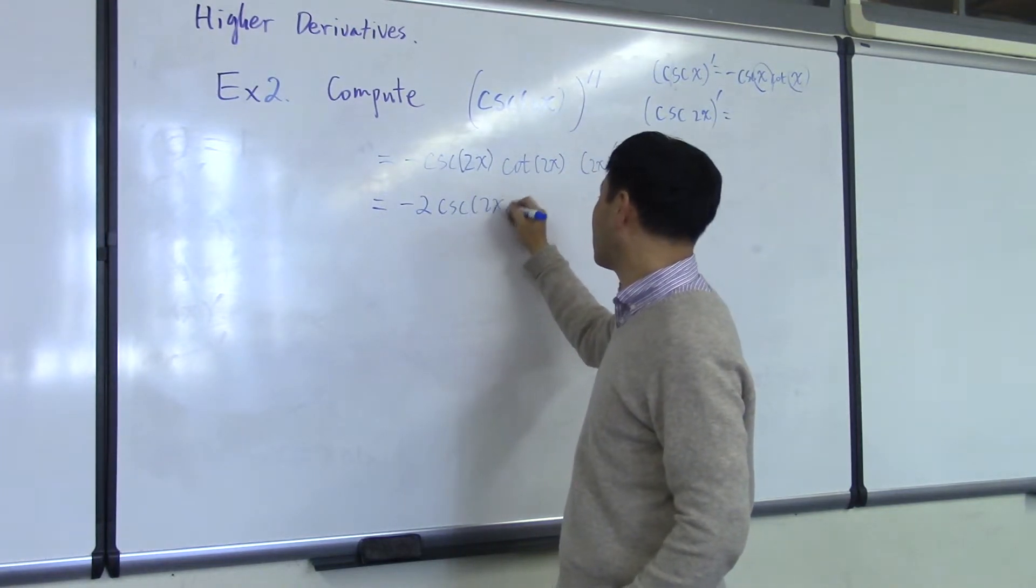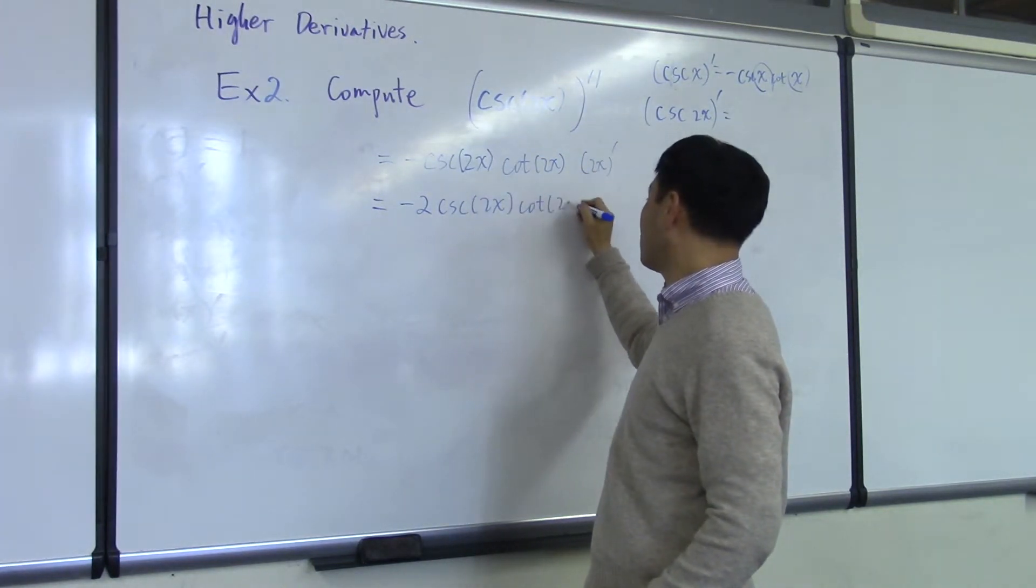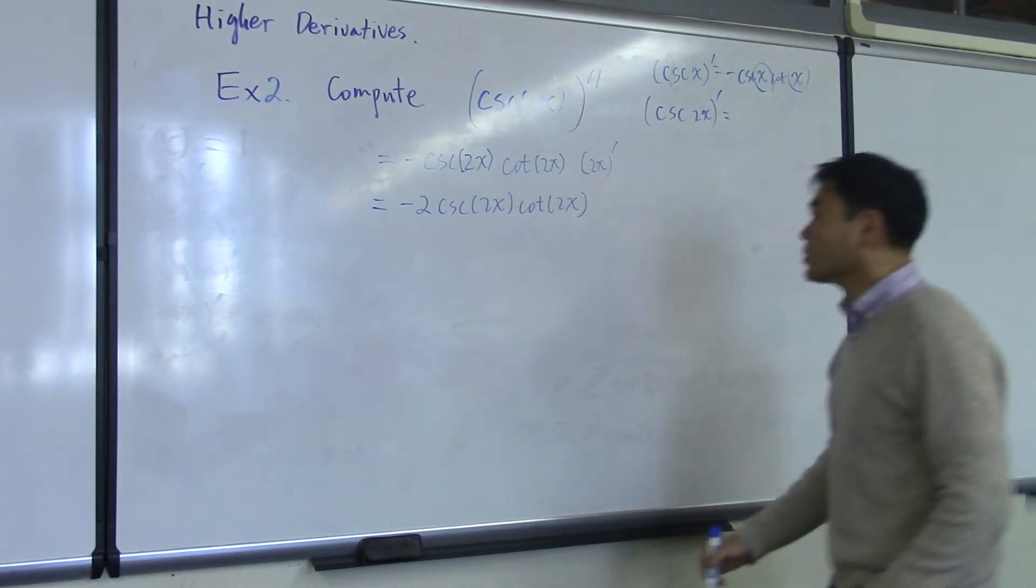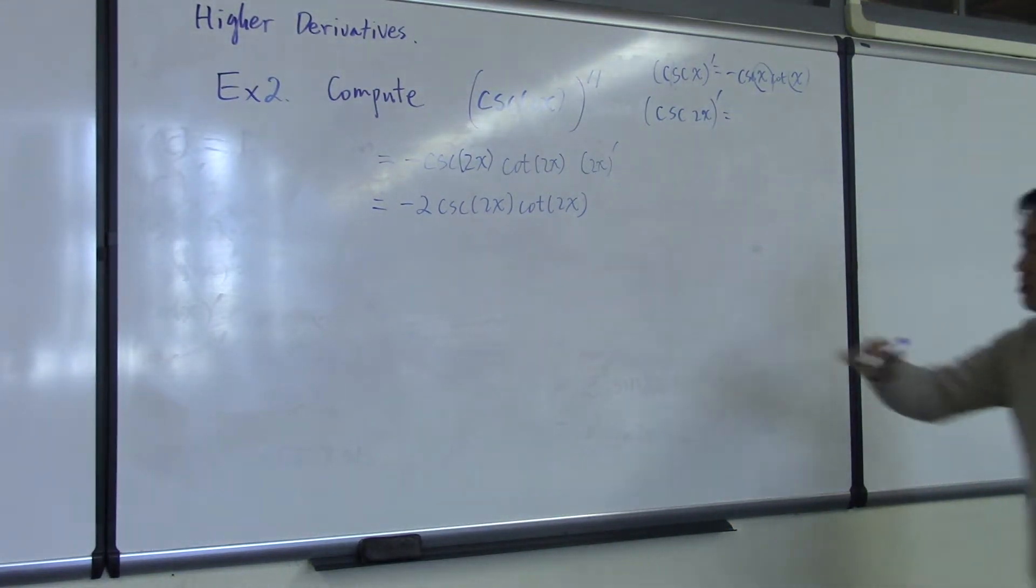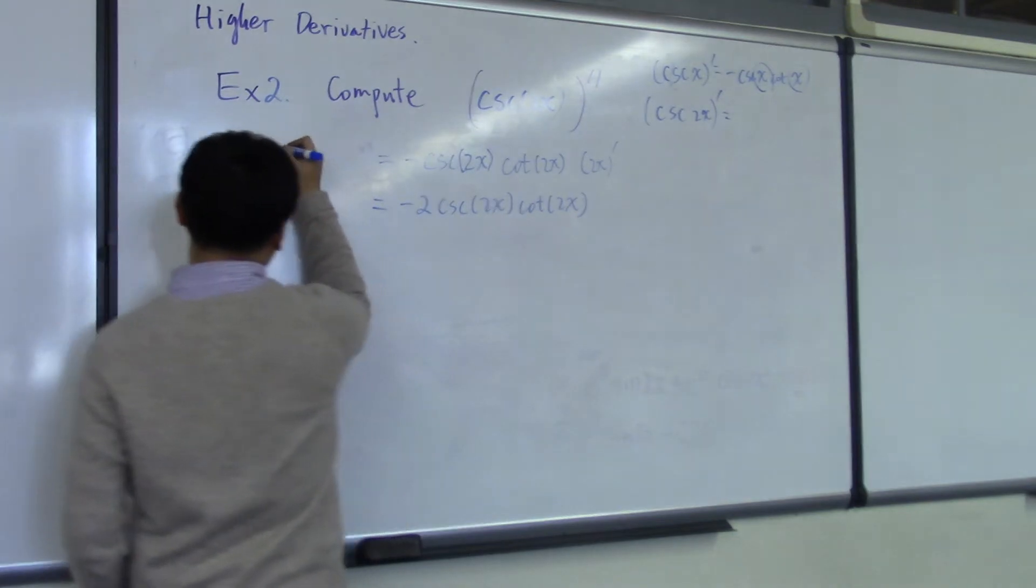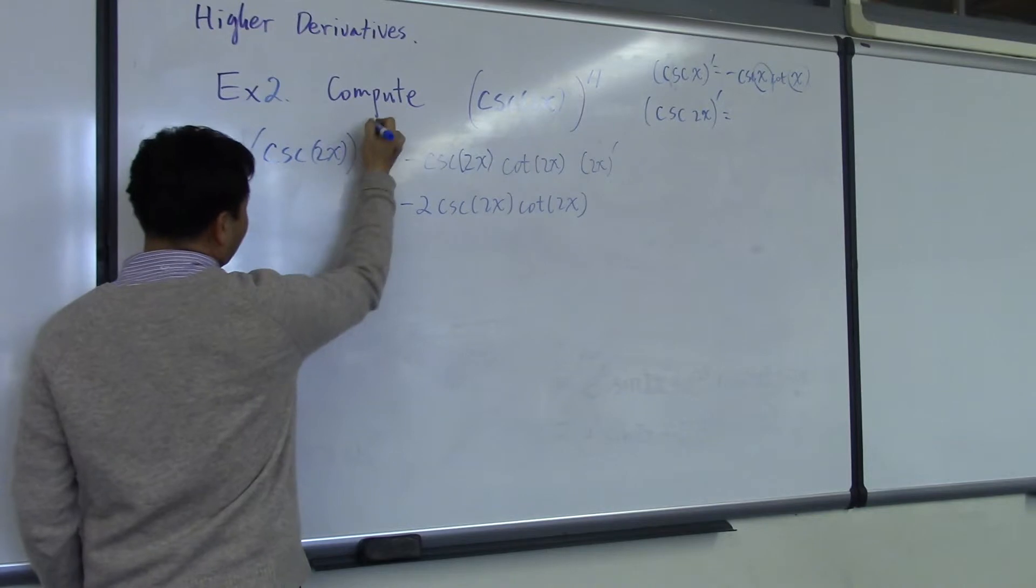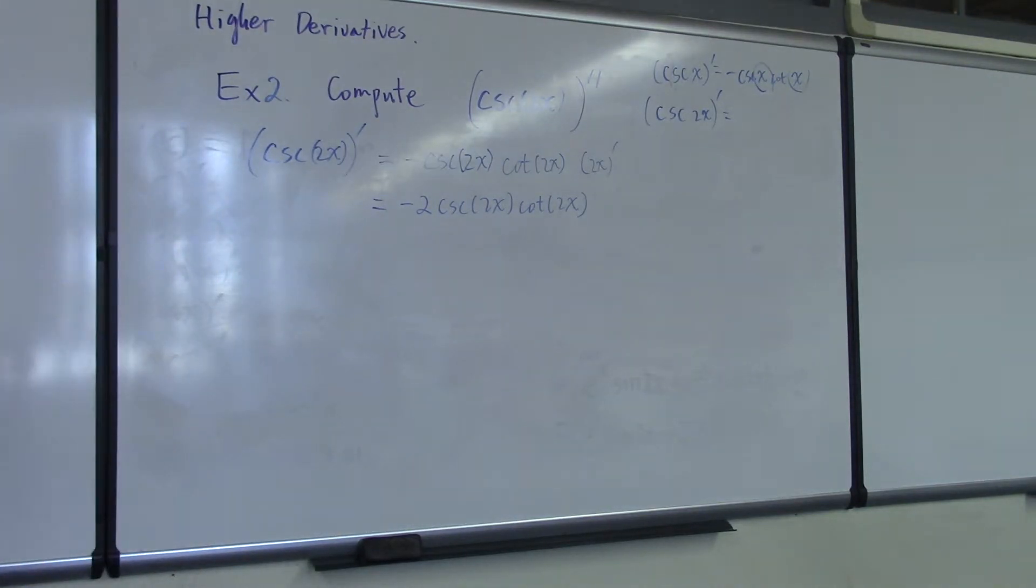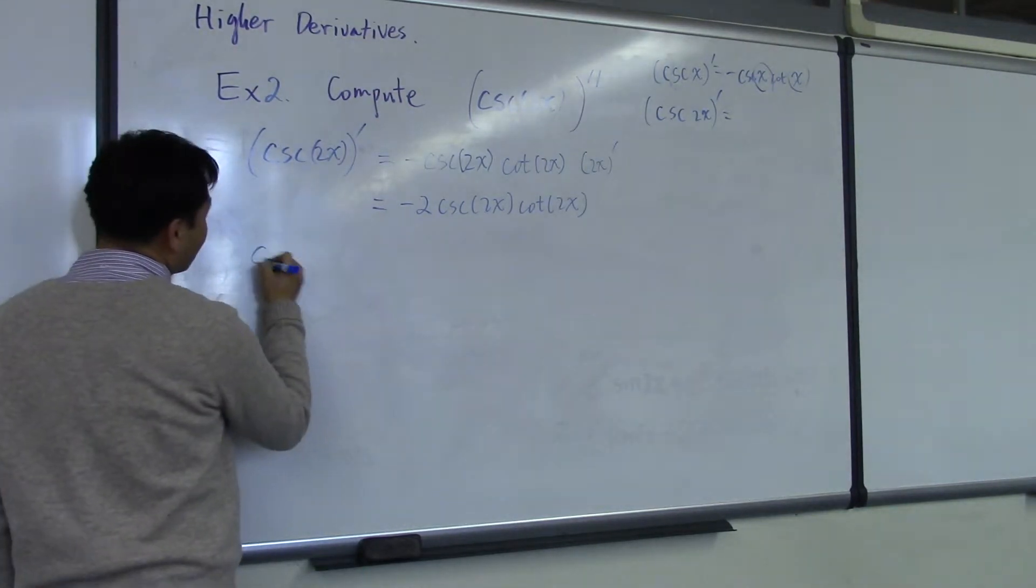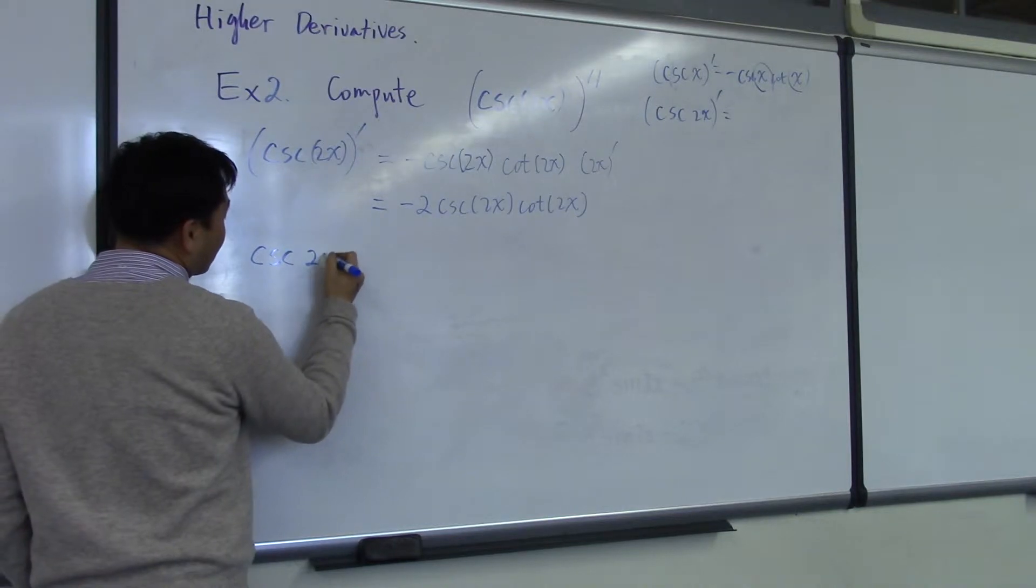This is negative 2 cosecant of 2x cotangent of 2x. But that's only—this is not the second derivative, this is just the first derivative. I should have written it like that. Then you still have to differentiate one more time. So the second derivative of this function is you have to differentiate this.